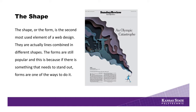The second element I'd like to talk about is shape. Shape or form is the second most used element of web design or any kind of design really — basically just different lines combined to form different shapes. This can be done in multiple types of design. It could be something where you use a real simple geometric shape, or as in the example I've shown here, the shape is used in a more conceptual way.